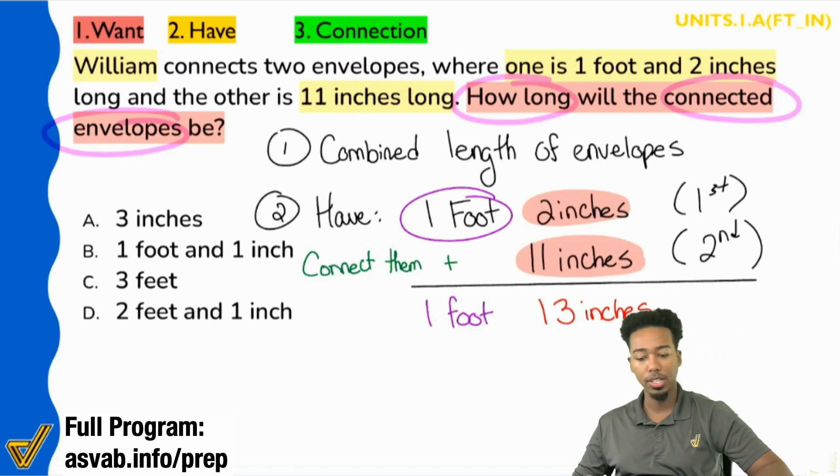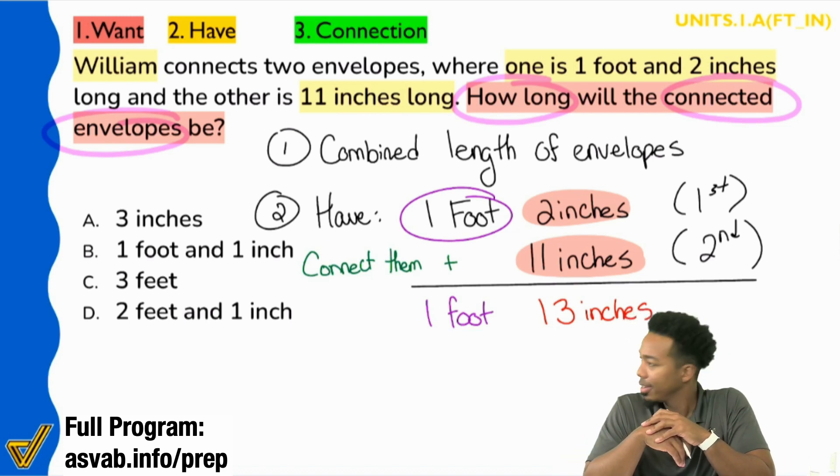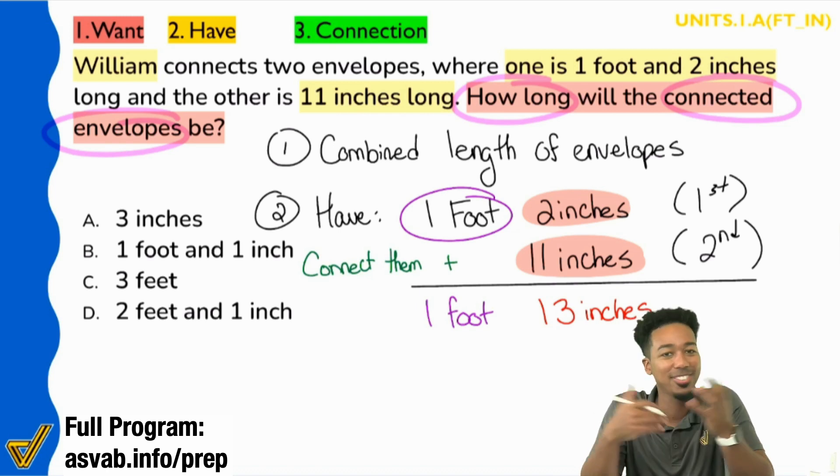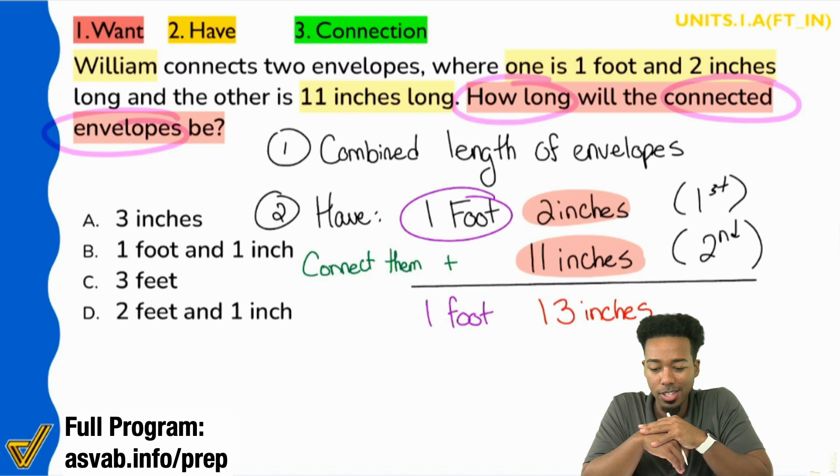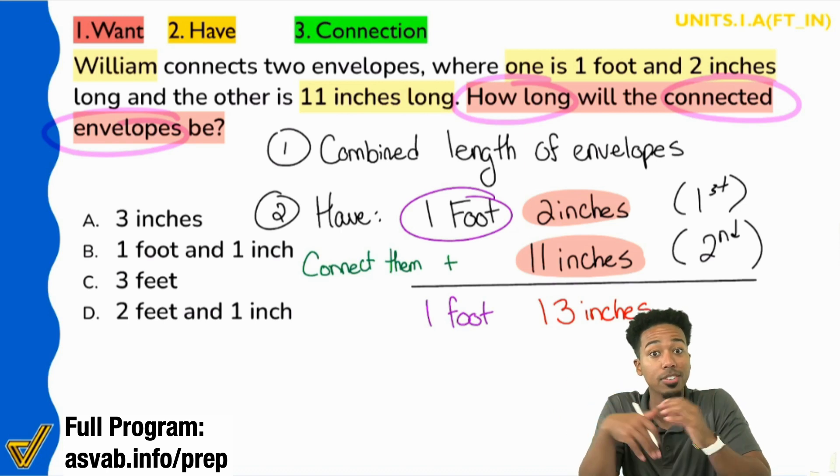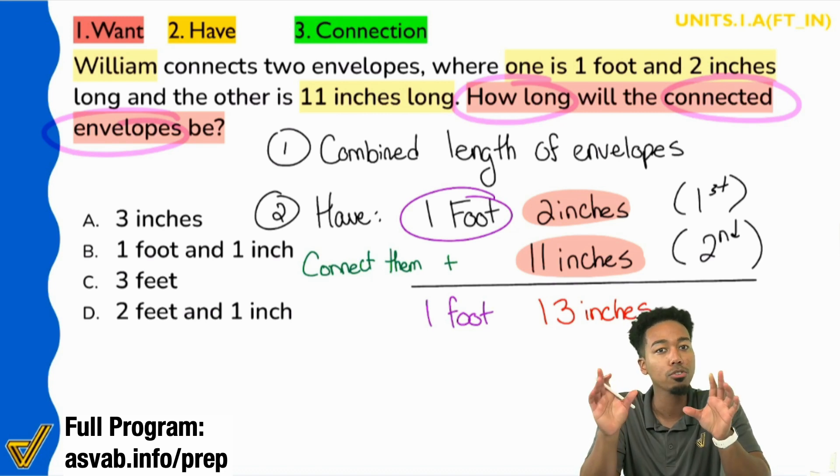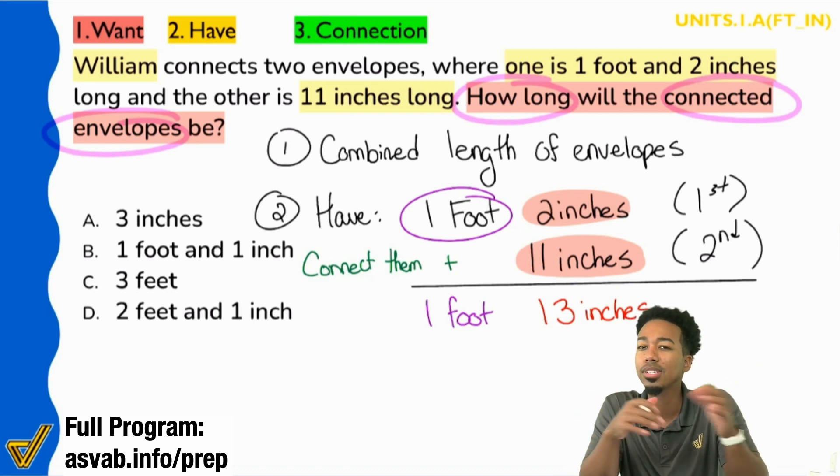So if we take a look at this, I don't see one foot 13 inches over there. What do you guys think we're supposed to do to make this a little more proper? Do you guys typically see inches after 12 being said as just inches? Not really, right? We typically convert any inches past 12 into the groups of feet, right? First question is this, everybody. Remind me again, fundamentals. One foot is how many inches?